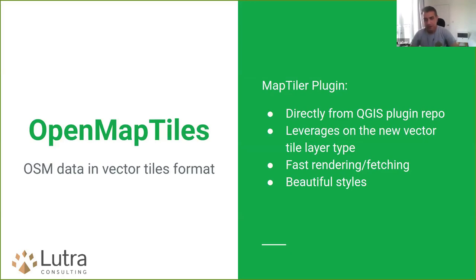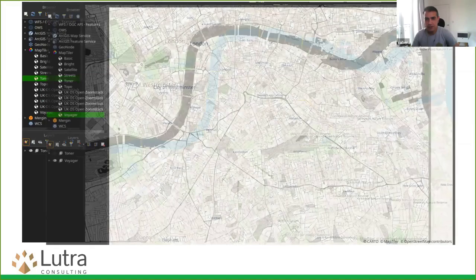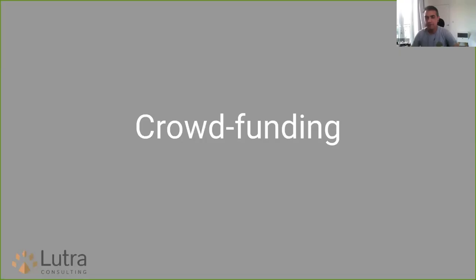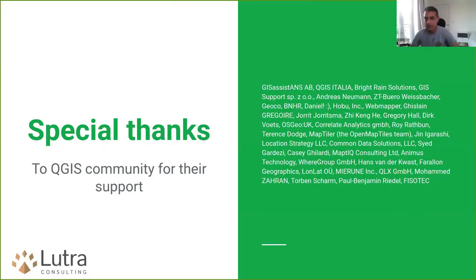MapTiler has updated their plugin to use this native renderer in QGIS — you can install the plugin and load really good quality maps using vector tiles in QGIS, including the UK OS OpenZoom Stack. All this effort was made possible through a crowdfunding campaign. Special thanks to Stephen and the rest of OSG UK who contributed. We have it now in QGIS 3.14, with the release date on Friday, so from early next week you can try the feature.